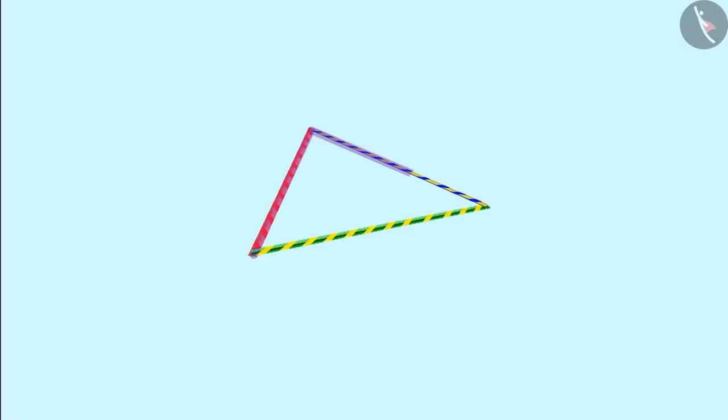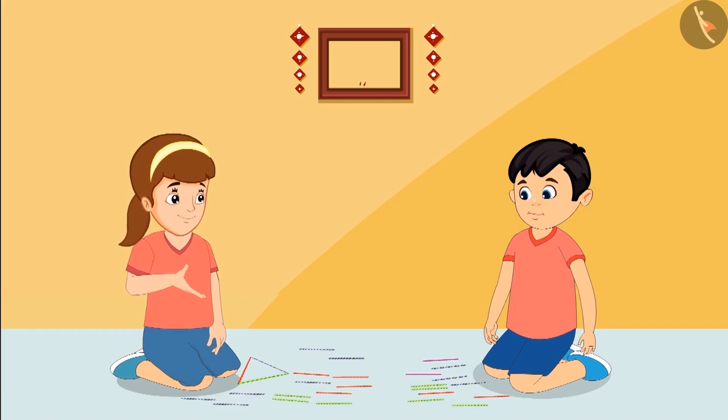Neha, this shape is made of three straws. It means it is a triangle. Is it so? Yes Chotu, you are right.